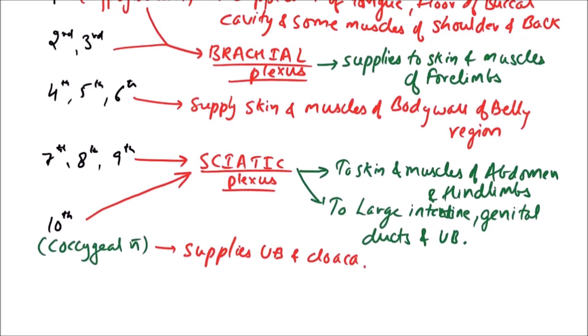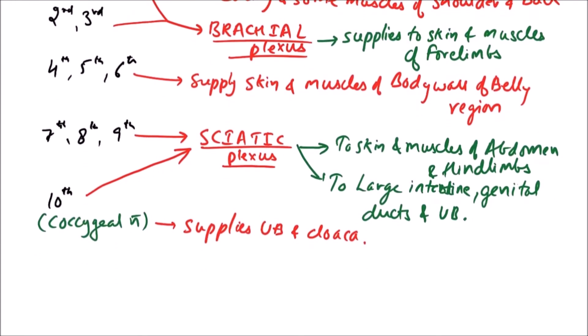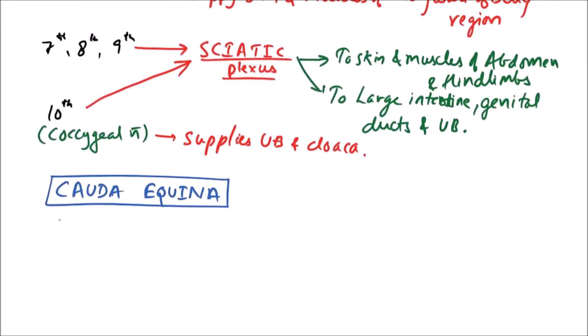Now there is a term that is cauda equina. Cauda means tail, equina means equus that is horse. It means a structure which appears to be like tail of horse. Now what is this?